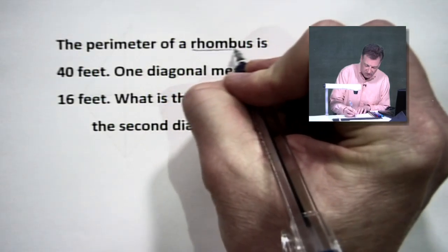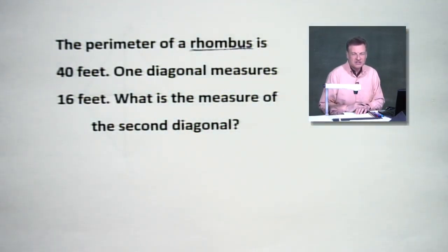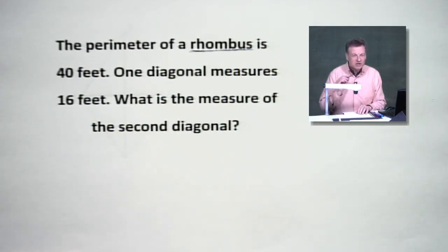First of all, we are dealing with a rhombus. A rhombus has a lot of special stuff about it. It looks like the diamonds on your playing cards - all those great games with playing cards. But it's actually a rhombus. We have all four sides that are congruent, they all have the same length.